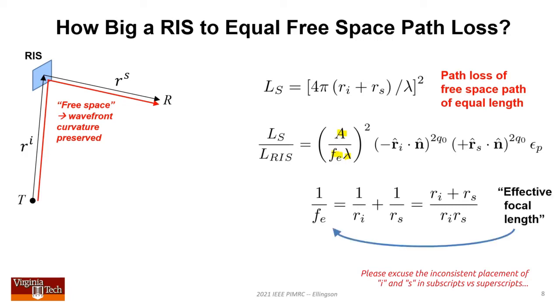Effective focal length is introduced to compactly describe dependence of the two distances, r super i and r super s, as a single variable. Those familiar with optics might see a deeper connection providing insight. RIS-enabled channel performance improves when effective focal length decreases. The key is making either incident or scattered path length much less than total path length. Put the RIS as close as possible to either transmitter or receiver. This emerges from very simple analysis.